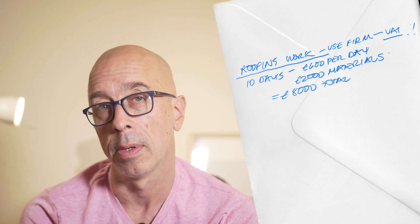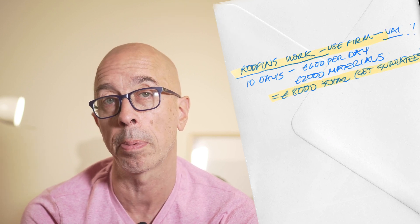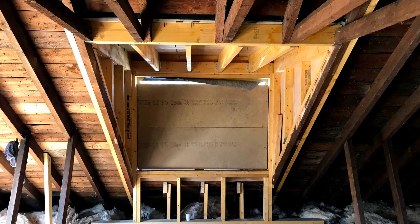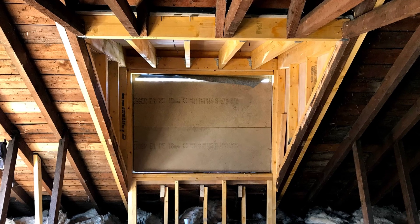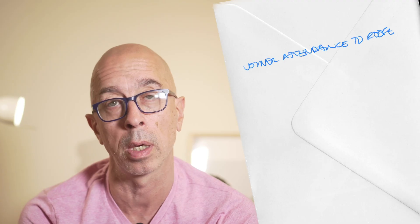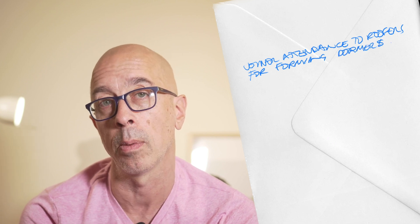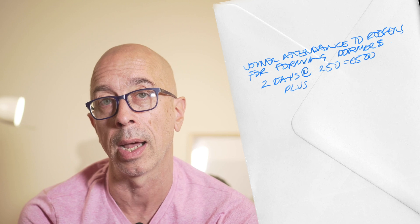For a traditional slate or tile roof in an older property there's more work cutting and sourcing the tiles, so I'll add another 1200 pounds. If you've got dormers you'll need a joiner to form them working alongside the roofer. We call this attendance time and I would say it's probably two days work, and I'll add this much to the roofers price for that.